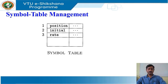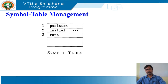An essential function of a compiler is to record the variable names used in the source program and collect information about various attributes of each name. These attributes may provide information about the storage allocated for the name, its type, and its scope, and where in the program its value may be used.